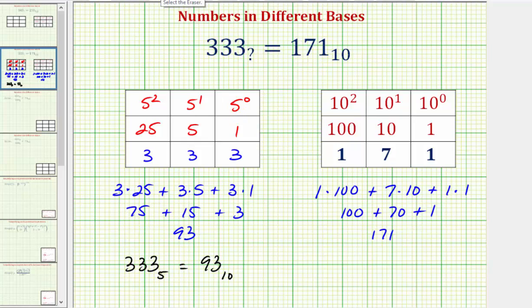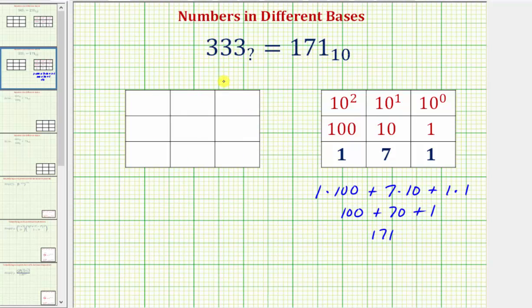Let's try base seven. So starting on the right, this would be the seven to the zero or ones place value, then seven to the first or the sevens place value, then the seven to the second or 49s place value.